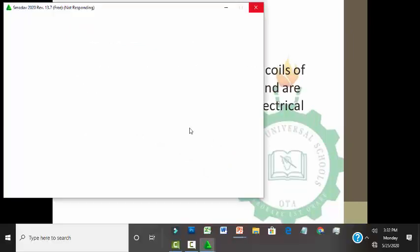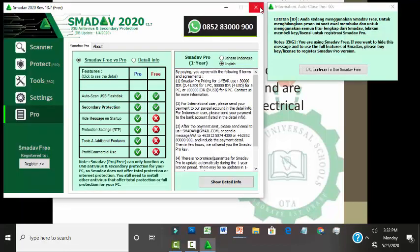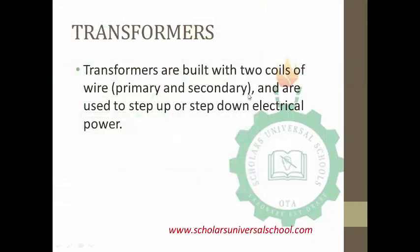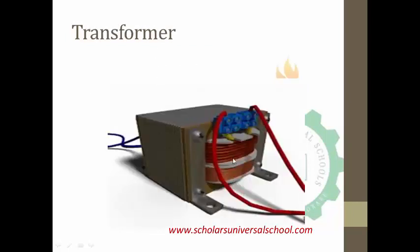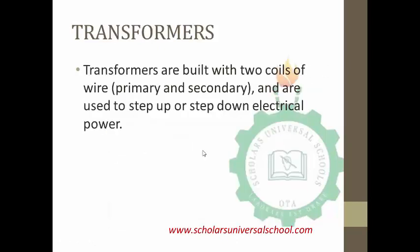The next device we will be talking about is the transformer. Transformers are built with two coils of wire — the primary and the secondary — and they are used to either step up or step down electrical power. Where you need to increase the electrical power in a circuit you use a step-up transformer, and where you need to reduce the input power you use a step-down transformer. The picture in front of us shows the coil from the primary side and the secondary side. This kind of transformer is mostly found on the circuit board.